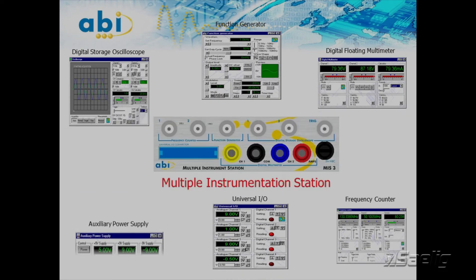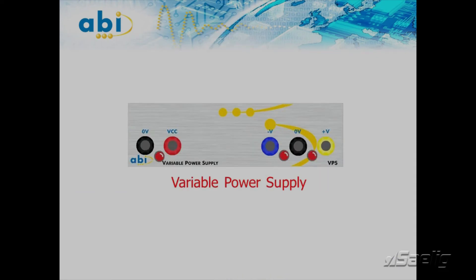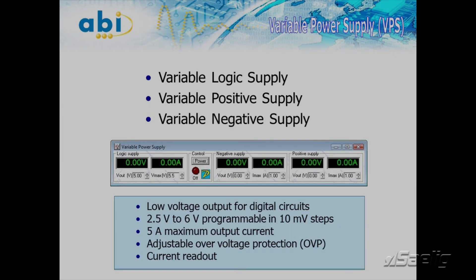The last module is the Variable Power Supply. The main function of the VPS is to provide the necessary supply voltages to the unit under test. The modules have three variable voltage outputs and offer over-voltage protection or current limitation.